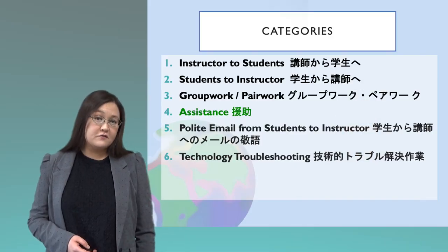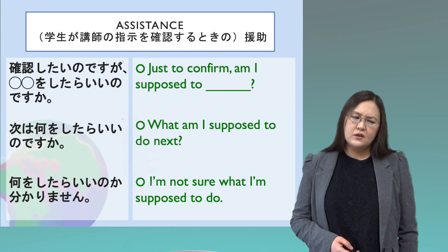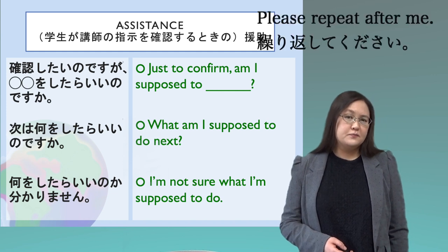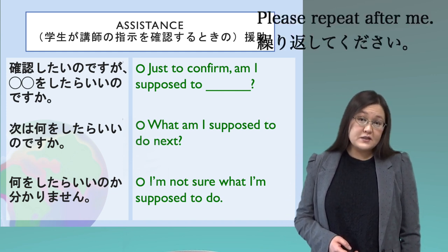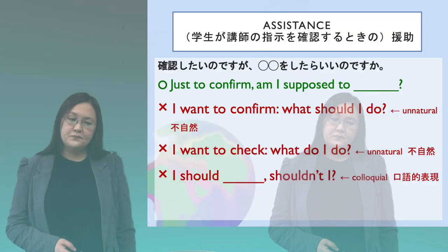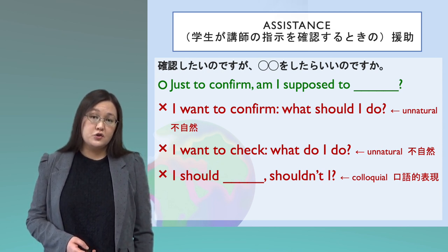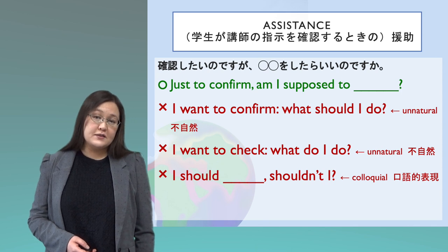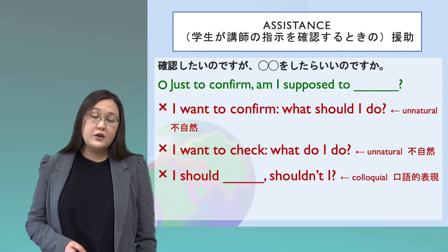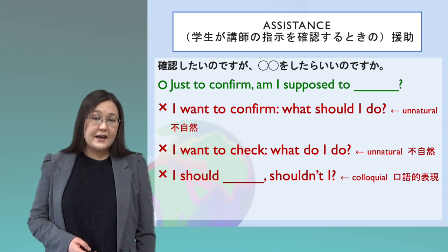Sometimes you need to ask for help from your instructor — phrases for assistance. 'Just to confirm, am I supposed to...?', 'What am I supposed to do next?', 'I'm not sure what I'm supposed to do.' This is natural English — 'supposed to' means 'should' or 'subeki' in Japanese — what you ought to do, what the instructor has instructed you to do. It is better than 'should' for natural, polite English.